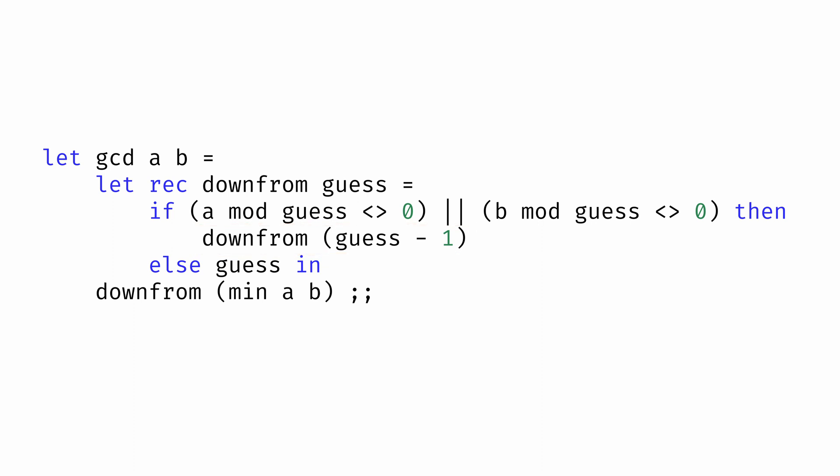So to compute the greatest common divisor between a and b, we just need to call our downFrom function on the minimum of a and b. That's our initial guess, and then the downFrom function will take care of making additional guesses if needed.